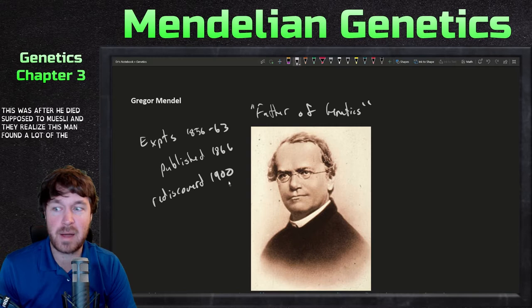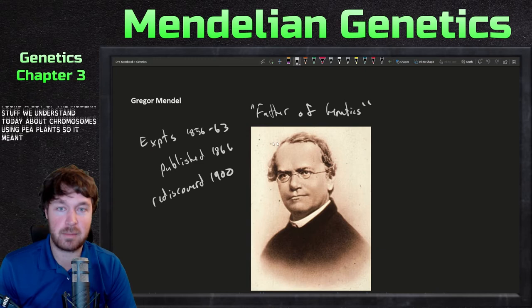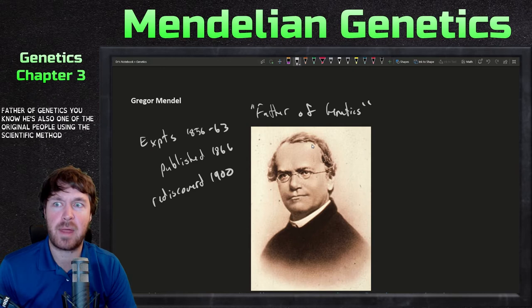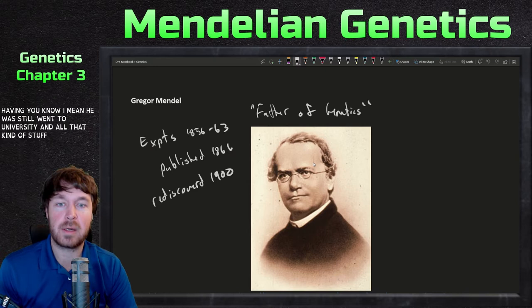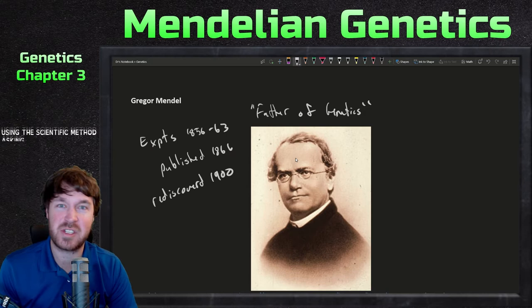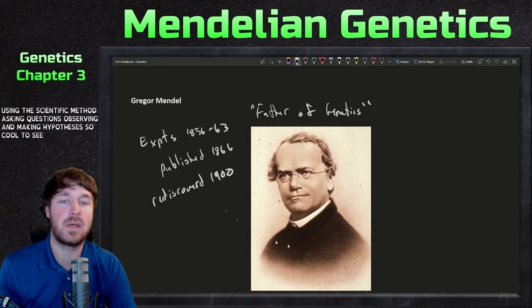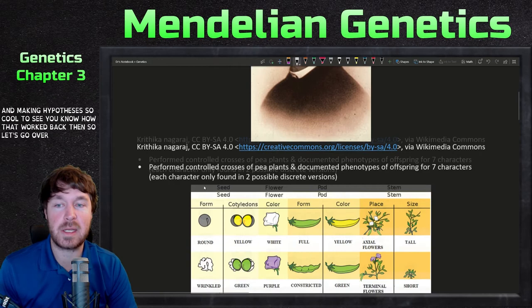They realized this man found a lot of the modern stuff we understand today about chromosomes, using pea plants. Mendel is the father of genetics — he's also one of the original people using the scientific method, just messing with his pea plants, taking notes, asking questions, observing, and making hypotheses. So let's go over what he did.